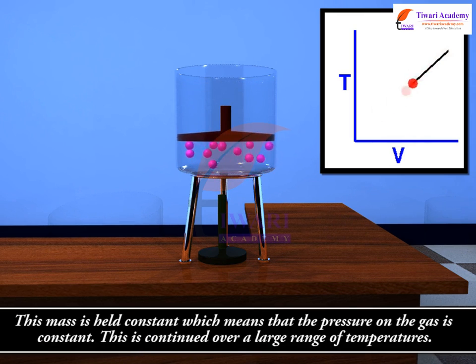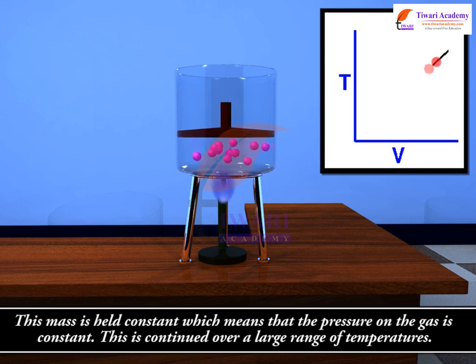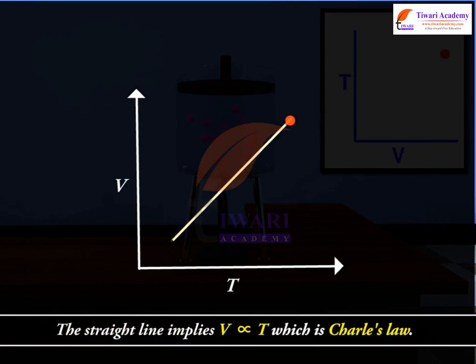This is continued over a large range of temperatures. The straight line implies V is proportional to T, which is Charles' Law.